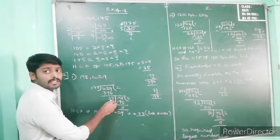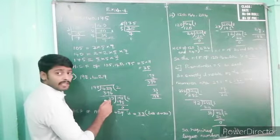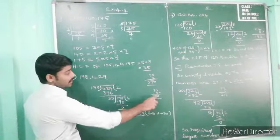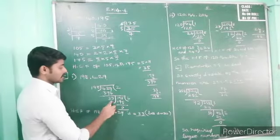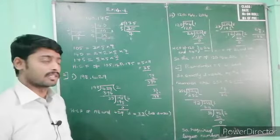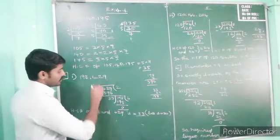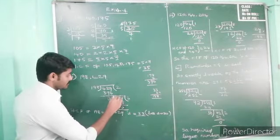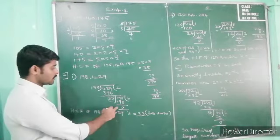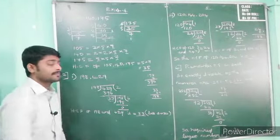Now 198 is the dividend and 33 is the divisor. Thirty-three multiplied by six is 198 exactly. So six, 33 sixes are 198, remainder is zero. Remainder is coming zero means — the last divisor will be the HCF answer. So here we have done two divisions; the final divisor is 33. So HCF of 198 and 429 is 33.